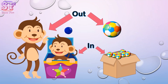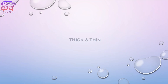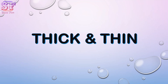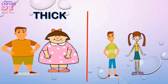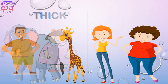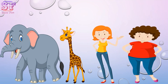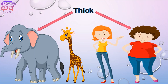Our eleventh concept is thick and thin. Thick — we are thick. Thin — we are thin. One side is thick and another side is thin. Can you guess which one is thick and which one is thin? Yes! These are thick and these are thin.